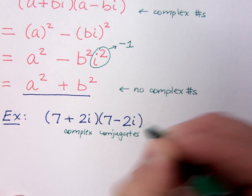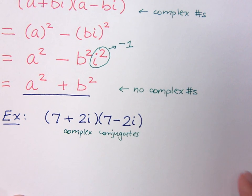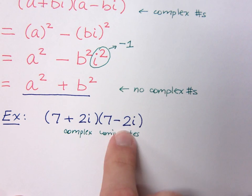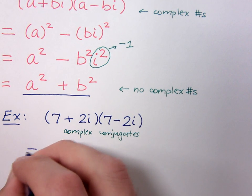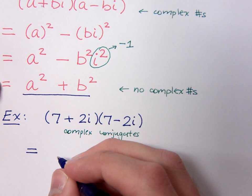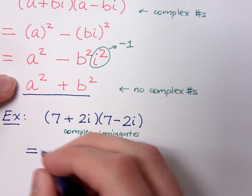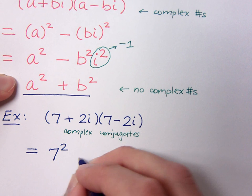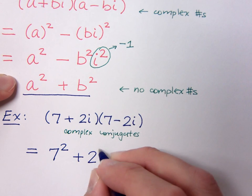With complex conjugates, the real parts are the same, and the imaginary parts are opposites. So according to this special product that I just wrote up here, a squared plus b squared, this should be 7 squared plus 2 squared.